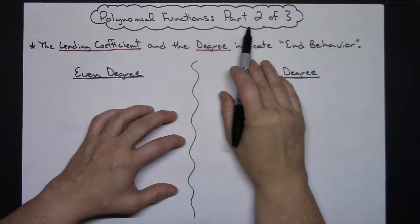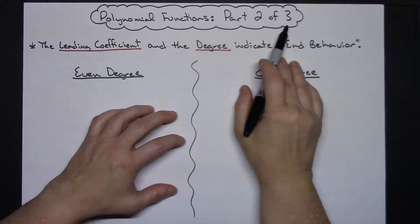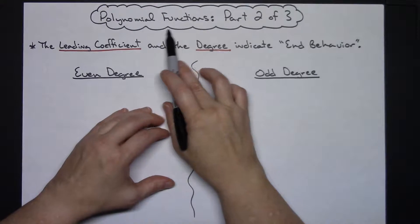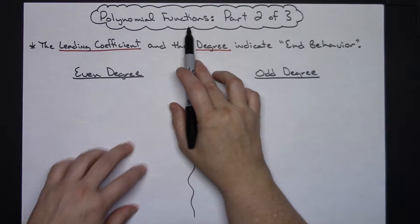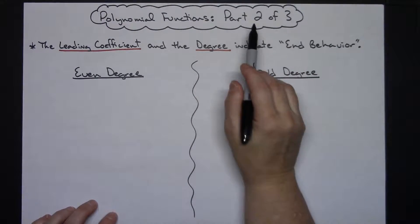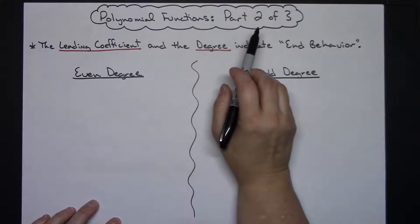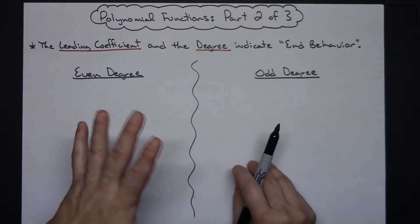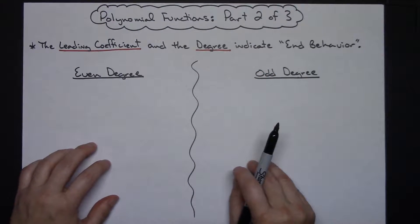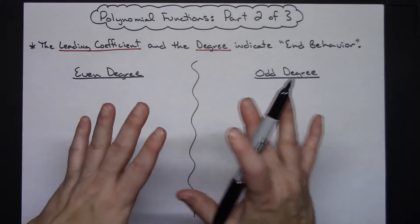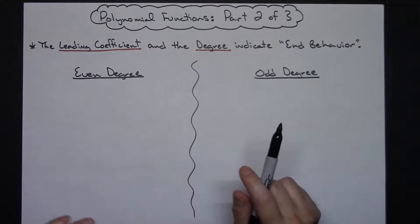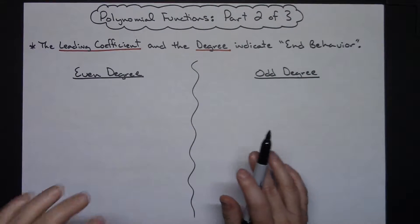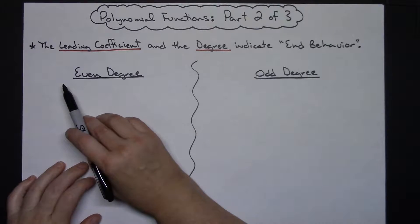This video is part two of three, and what we're doing is a nice little introduction to polynomial functions. If you didn't catch the first one, you might want to go watch that before this one — it gives you a nice introduction before we get to talking about the leading coefficient and the degree of a polynomial function.